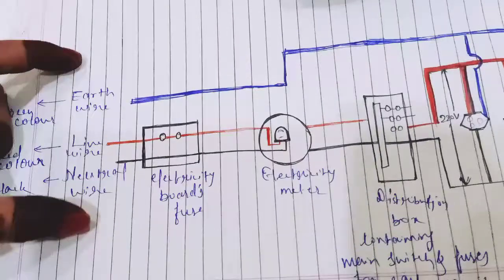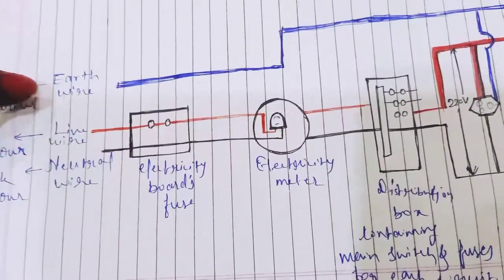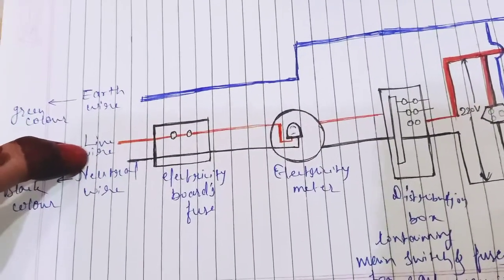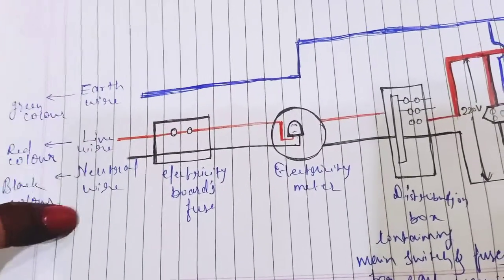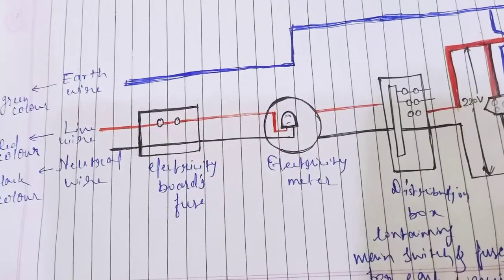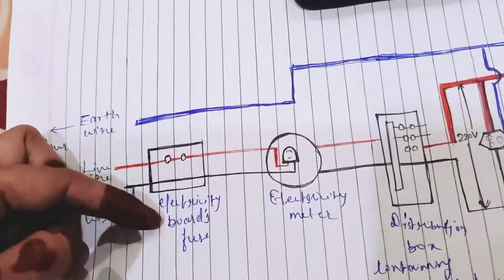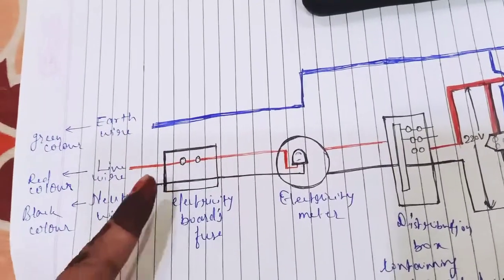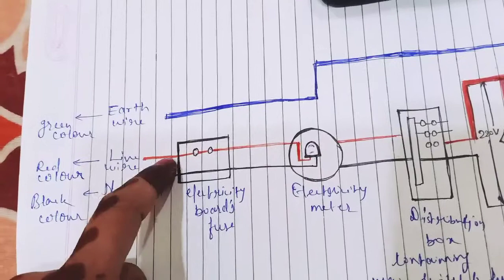This is known as line wire. These three wires - earth wire, live wire, and neutral wire - are known as line wires and they are parallel to each other.